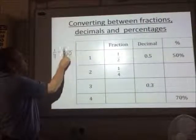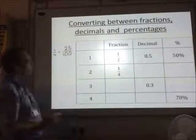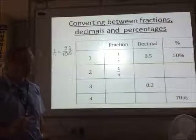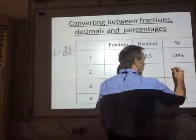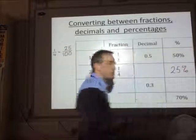So I want to convert it into something out of 100. So 4 times 25 gives me 100, so 1 times 25 gives me 25.